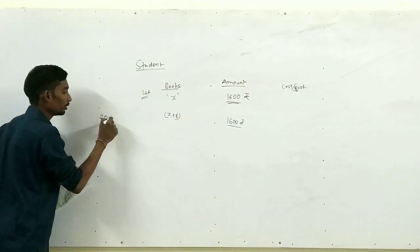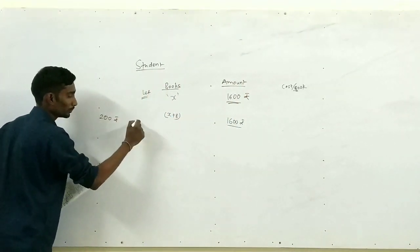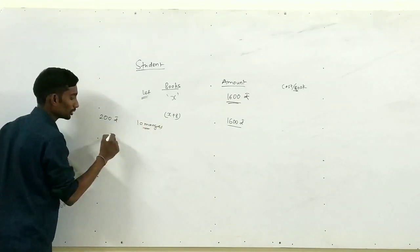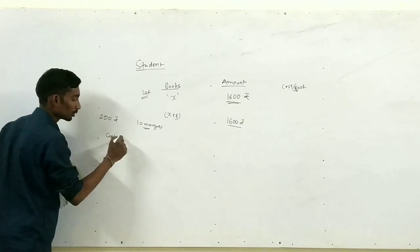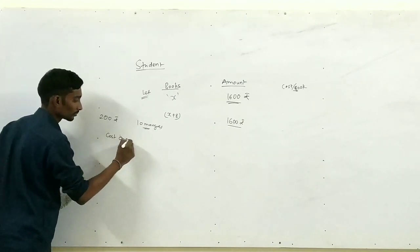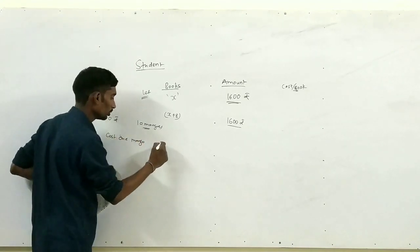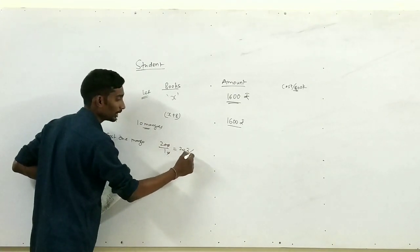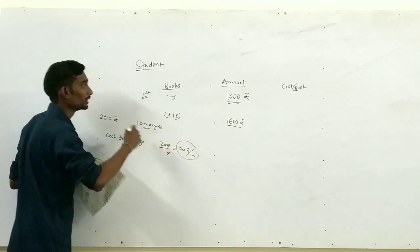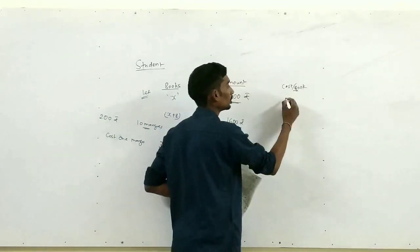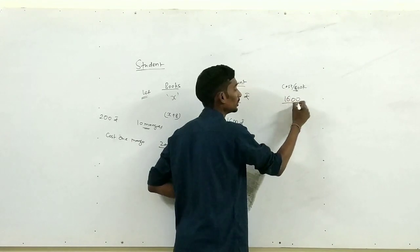Suppose मैंने ₹200 में 10 mangoes खरीदे, तो cost per mango कितना होगा? 200 divided by 10 = ₹20 per mango। Similarly, उसने ₹1600 में x books खरीदे, तो एक book की cost होगी 1600 divided by x।